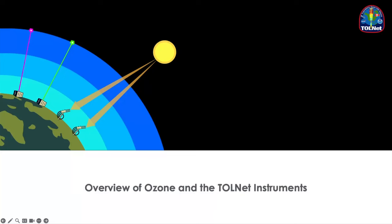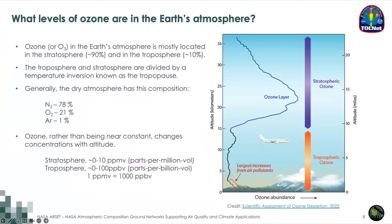Today I'm going to give you a nice overview of TOLNet, and hopefully you'll walk away with a better understanding of lidar, of ozone in the atmosphere, and of our relevance and background motivation for the network. The first question to discuss is what levels of ozone are in Earth's atmosphere. Earth's atmosphere is broken into two main sections: the stratosphere and the troposphere.